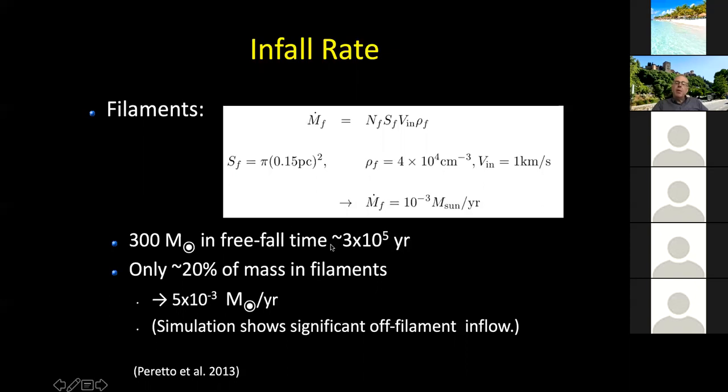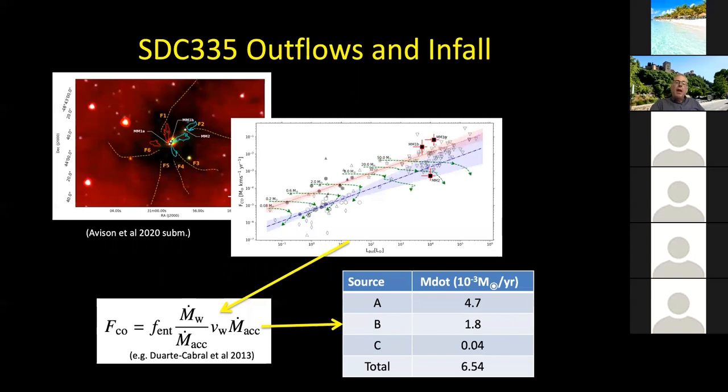If you look at the filaments that we see in this region, you can get an estimate for the inflow rate through them. And you find that the mass inflow rate is something like 10 to the minus 3 solar masses per year. So that is somewhat larger than the value I said we need to form high mass stars. However, only about 20% of the mass in this region is actually in the filaments. So the global inflow rate in SDC 335 is about 5 times 10 to the minus 3 solar masses per year.